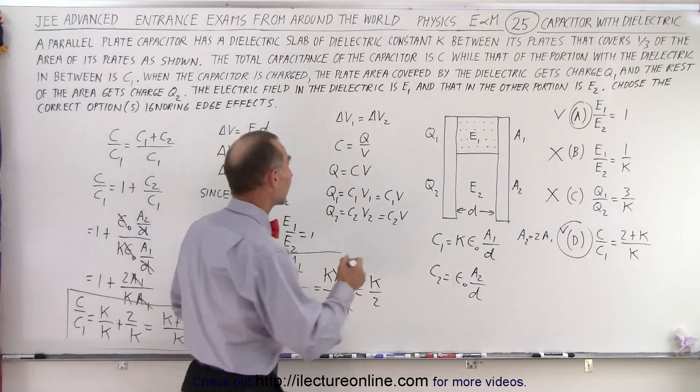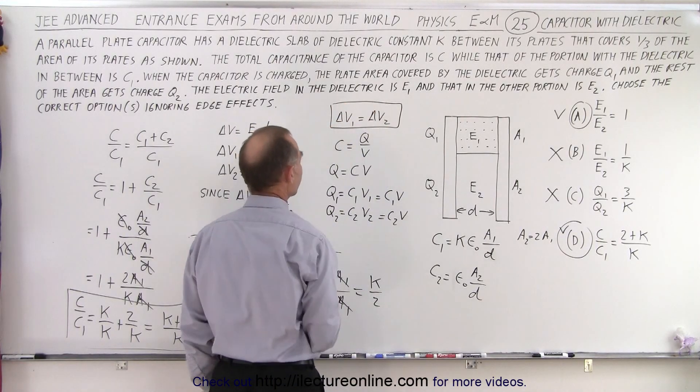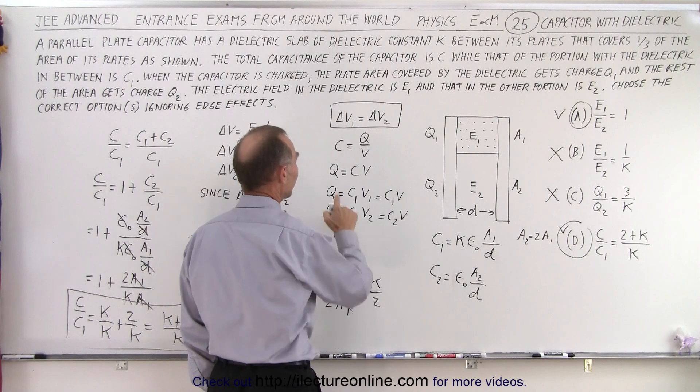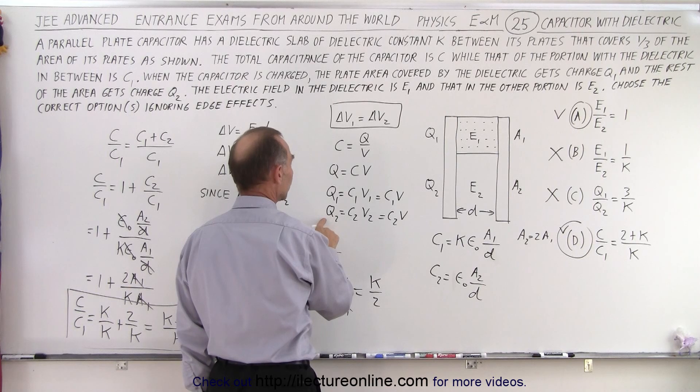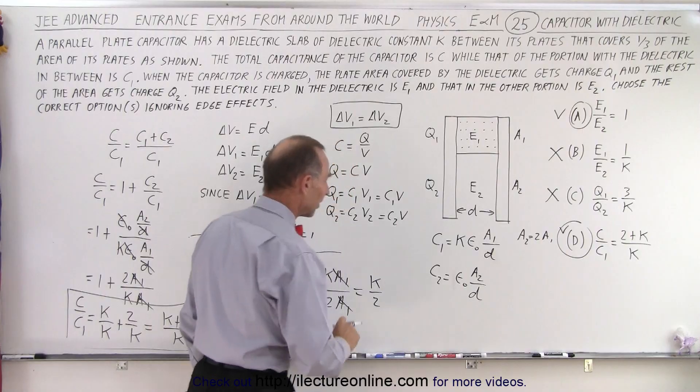the key things to realize is that the voltages must be the same, and since Q is C times V, that means that Q1 over Q2 is the same as C1 over C2 because the voltages are the same. So those two ratios are the same.